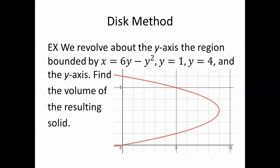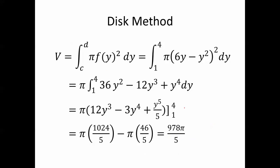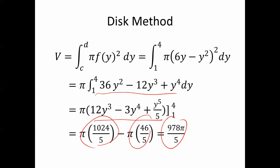For example, we revolve about the y-axis the region bounded by x equals 6y minus y squared, y equals 1, y equals 4, and the x-axis. Find the volume of the resulting solid. The bounds are y equals 1 and y equals 4. We get pi times 6y minus y squared squared, integrated from 1 to 4. Multiply it out, integrate, plug in 4 and then plug in 1, and the answer is 978 pi over 5.